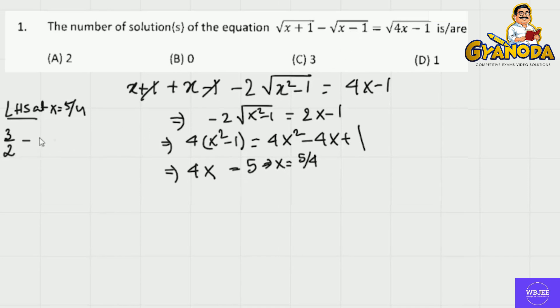This equals root 4 times 5 by 4, equals root 4 times 5 by 4, equals root 5 minus 1 which is 2.